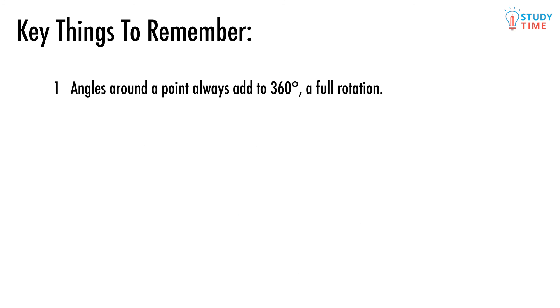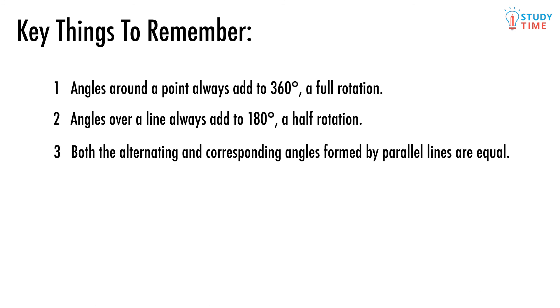Remember, angles around a point always add to 360 degrees, a full rotation. Angles over a line always add to 180 degrees, a half rotation. Both the alternating and corresponding angles formed by parallel lines are equal. The co-interior angles add to 180 degrees. The angles inside a triangle also add to 180 degrees.